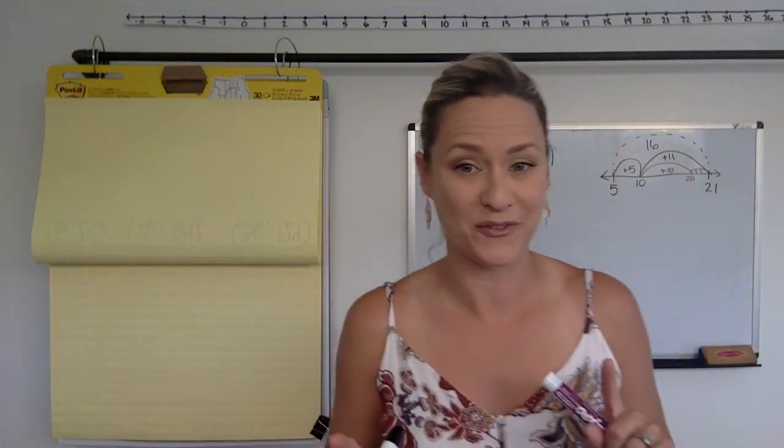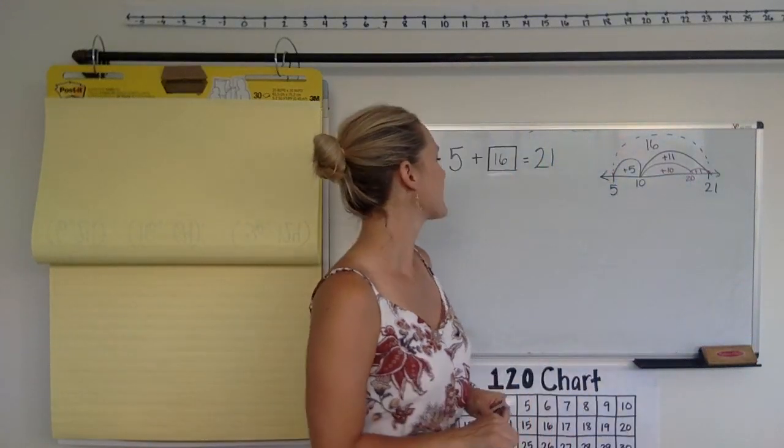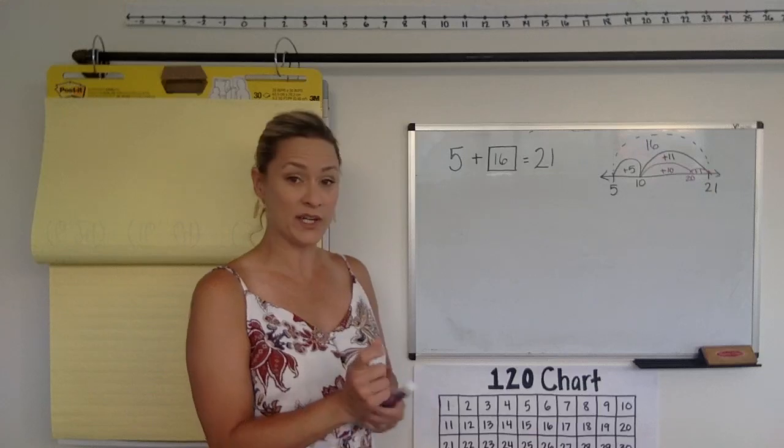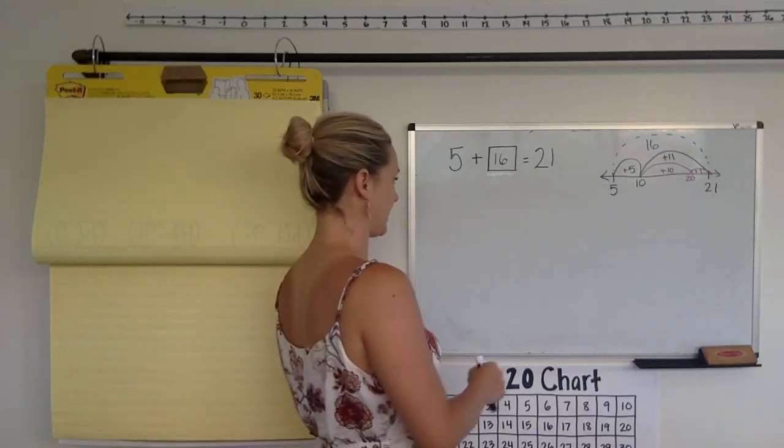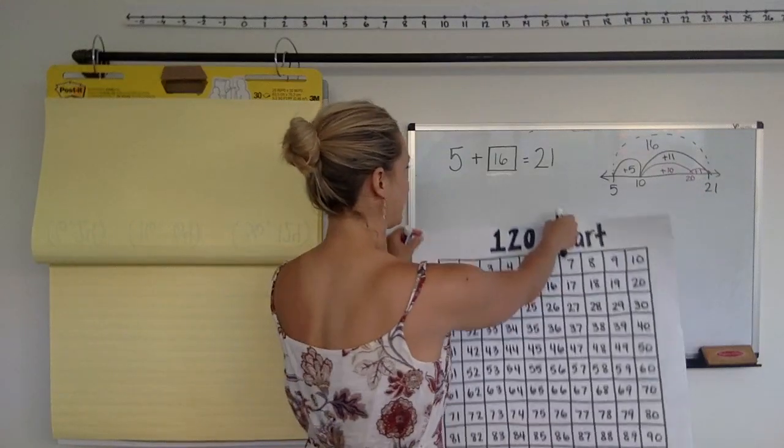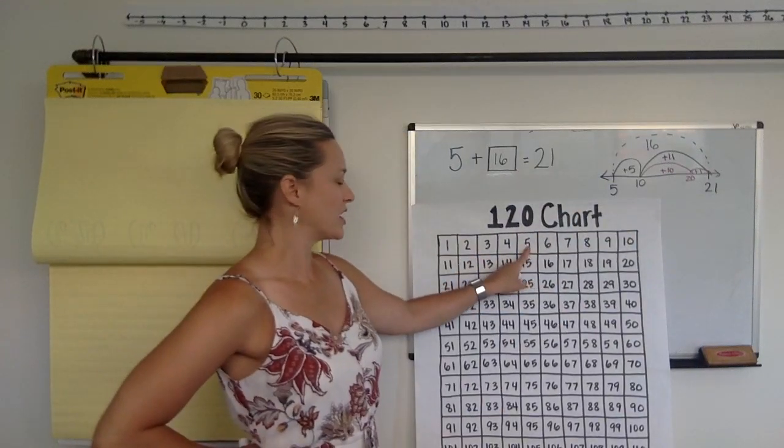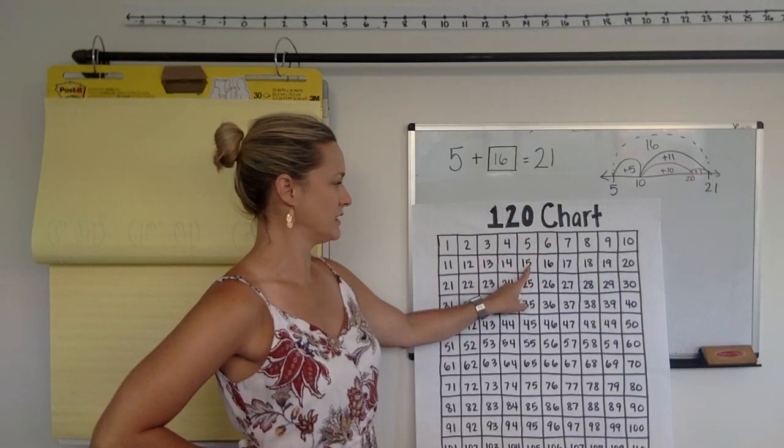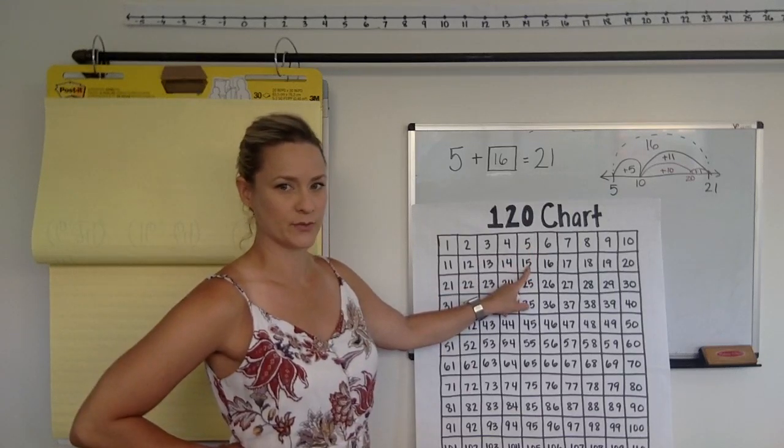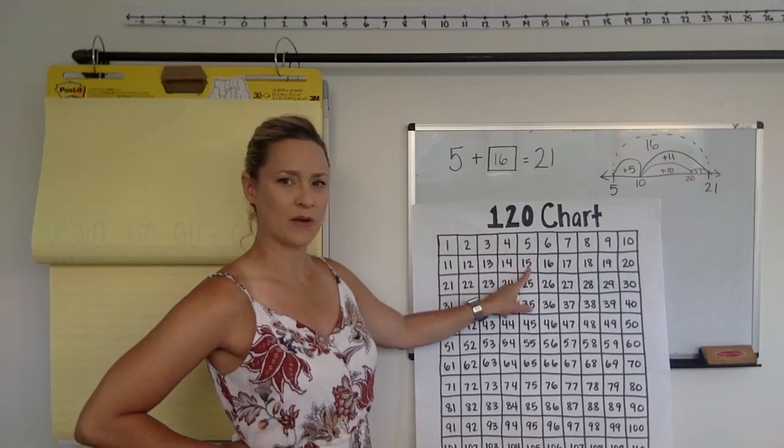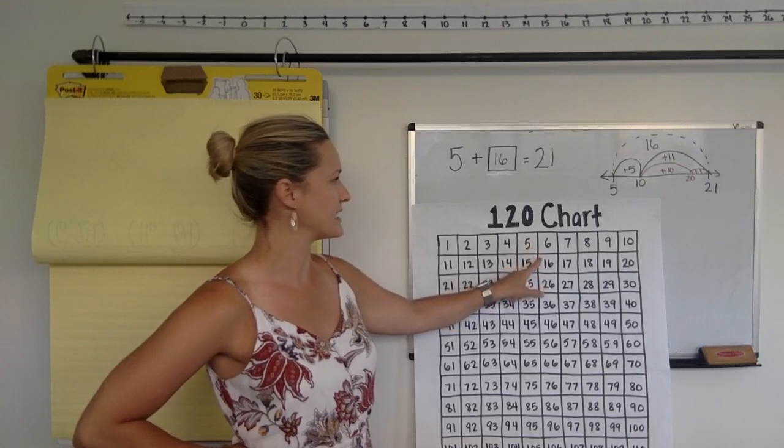maybe you added them all together, and you knew that 11 plus 5 was 16. So, maybe you figured it out that way. I'm wondering, did anyone use a 120 chart in their mind or look at it? So, maybe you thought about a 120 chart, and you knew that you could go down one row. So, when we go down one row, we know that we're adding 10.